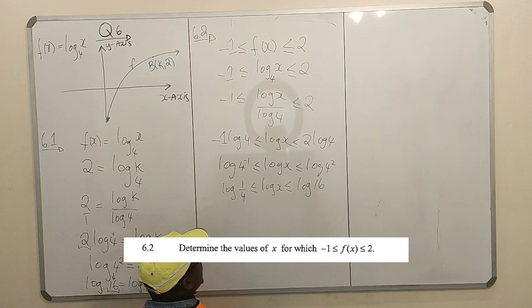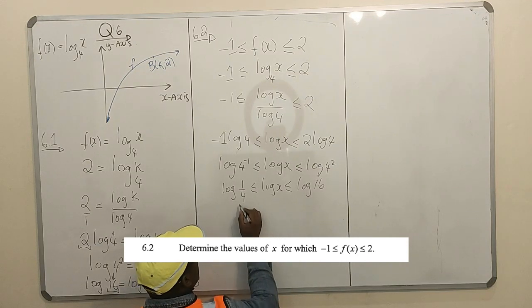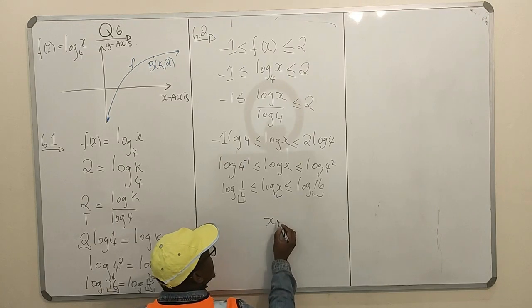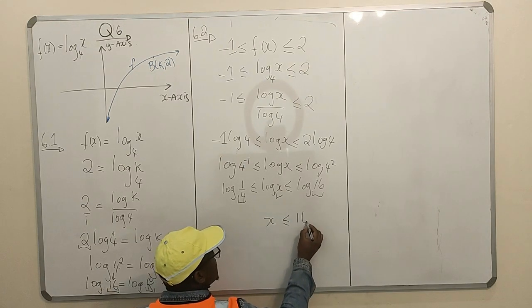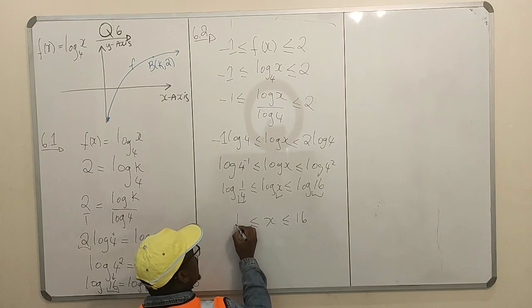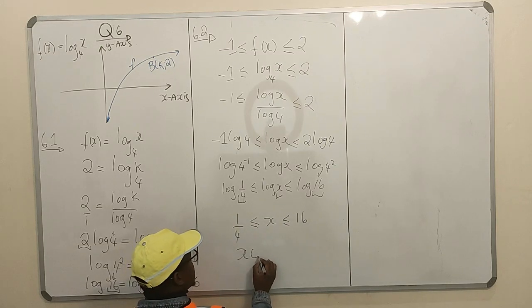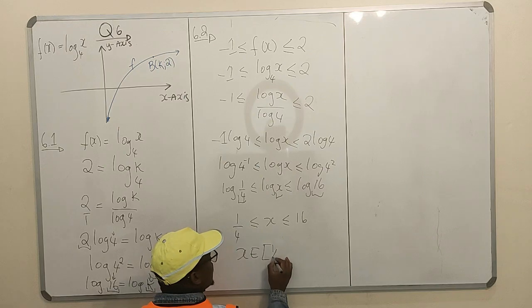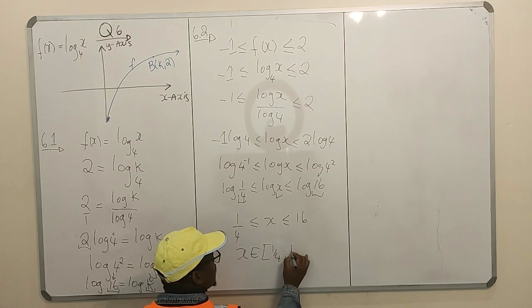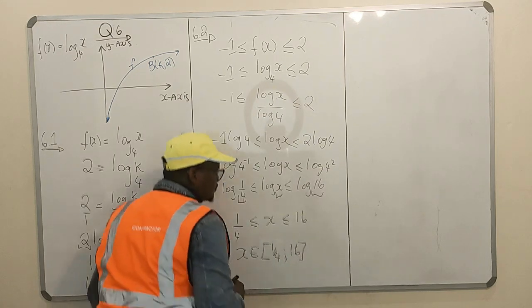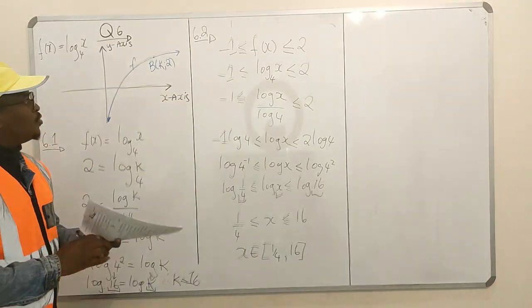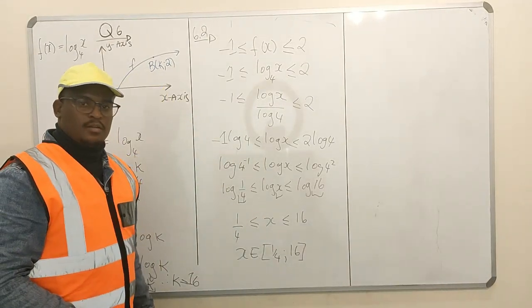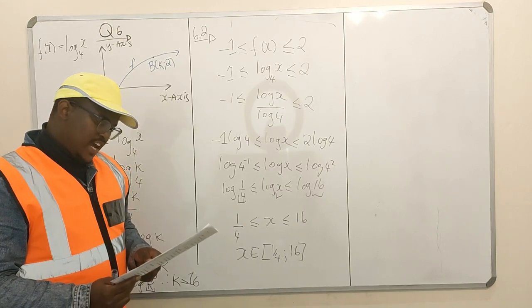You have log 1/4 less than or equal to log x less than or equal to log 16. It's obvious now that x is less than or equal to 16, greater than or equal to 1/4. So x is an element of [1/4, 16]. We're done here.